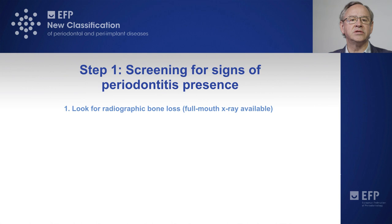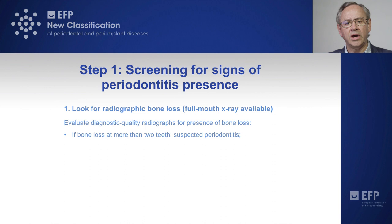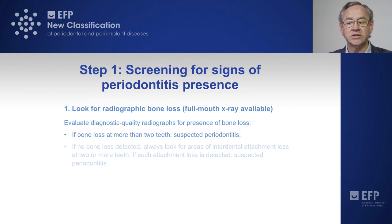Normally when we have a new patient we may have a radiograph — a full mouth x-ray or even a panoramic x-ray — that we can use to screen the situation. We need to evaluate for the presence of bone loss, and if we can detect bone loss at more than two teeth, then we have a patient that is suspect of periodontitis.